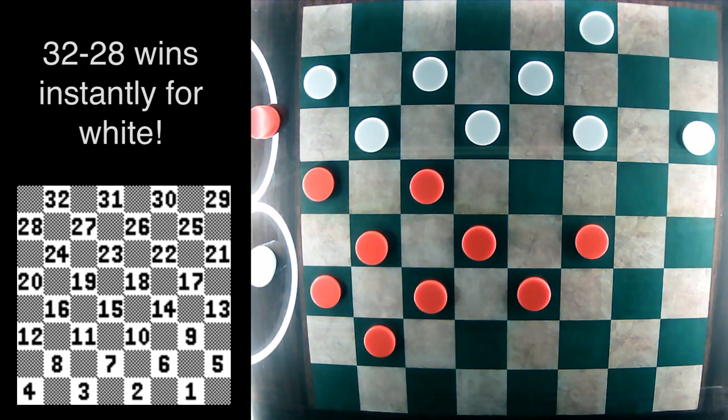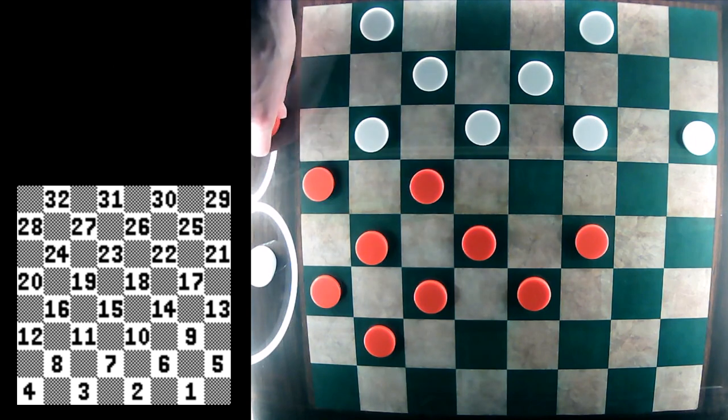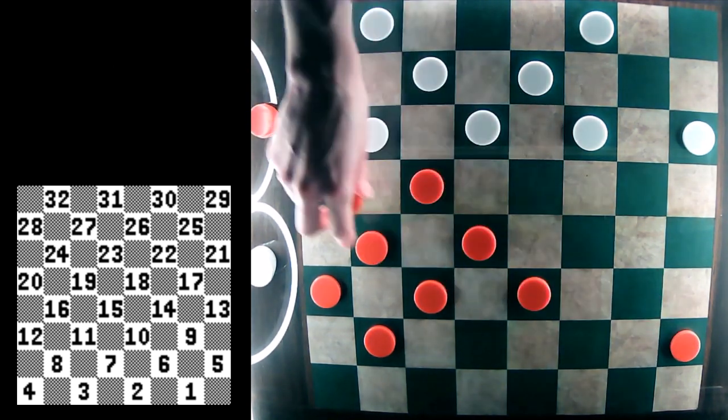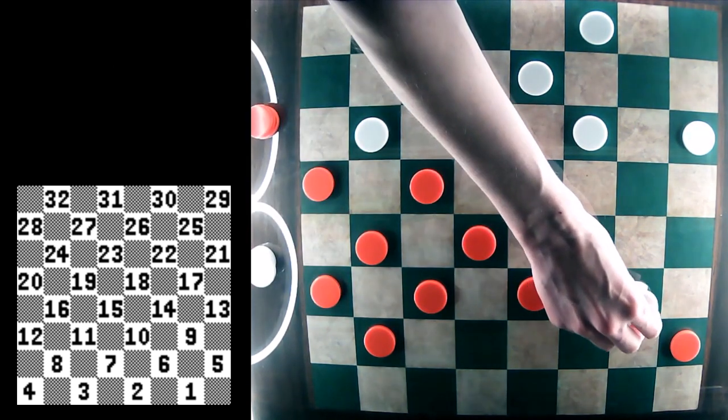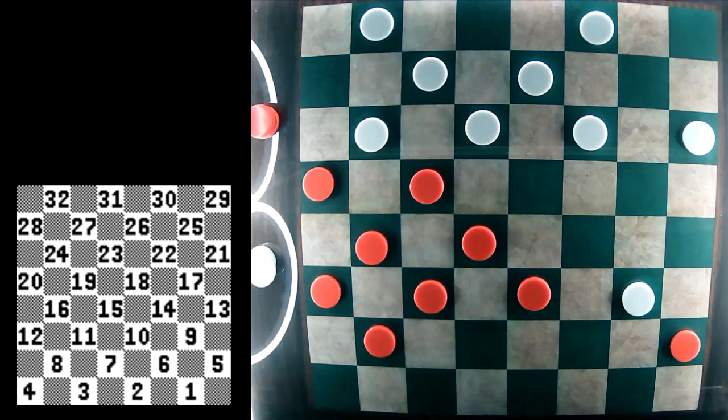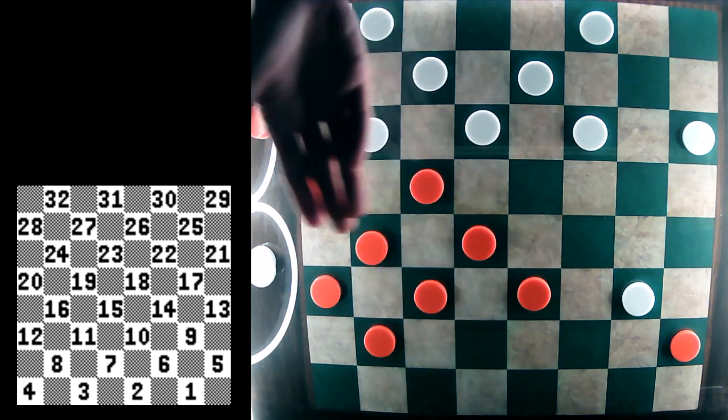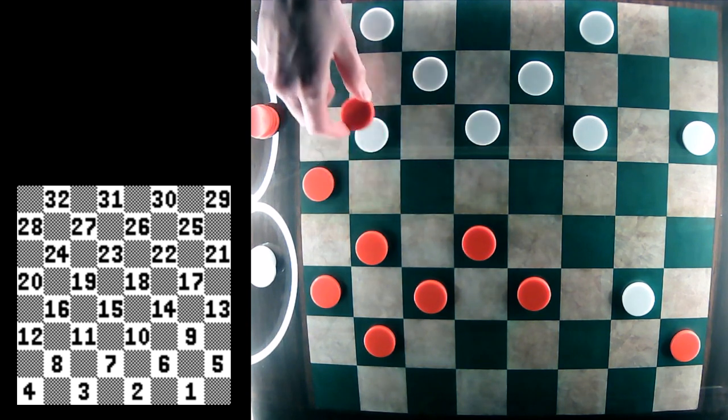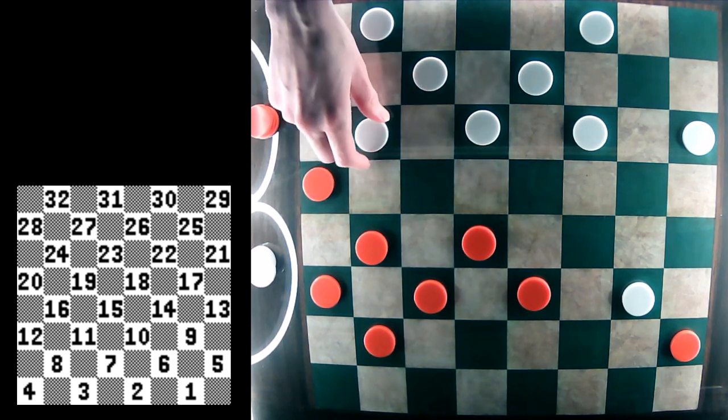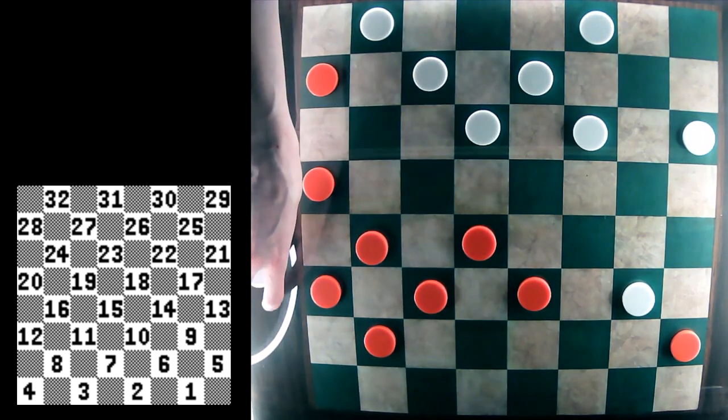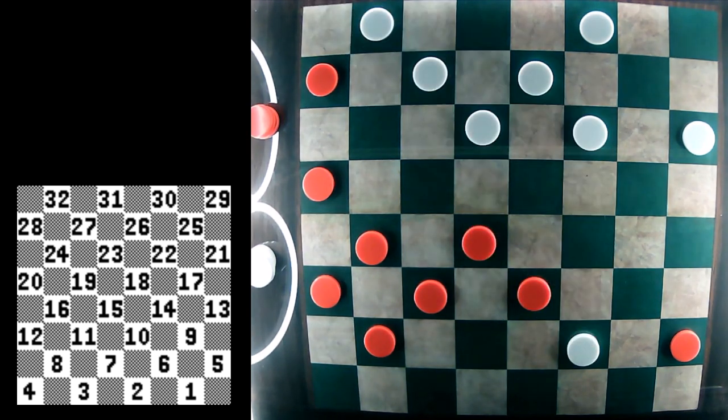I recommend playing this out on your own board just to see how this can happen. So really, really great tactical sequence there. But instead, it's best for, well, the only move is for red to jump 19-28. And now white can safely go 9-6.